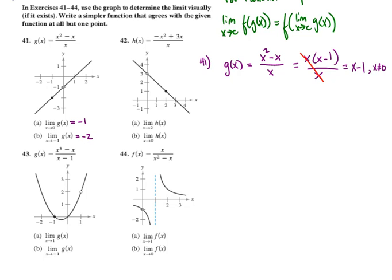What we wanted to do there was to find a simpler function that agrees with the given function at all but one point. The point where they don't agree is at x equals 0. Aside from that, the graph of x squared minus x over x is identical to the graph of x minus 1.